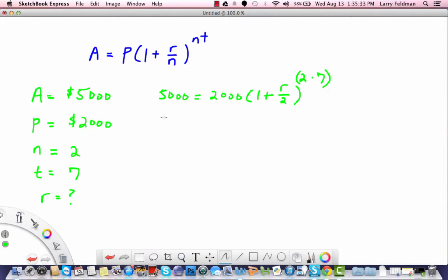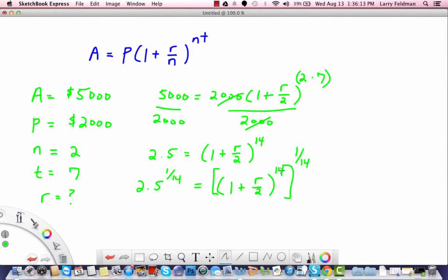Let's simplify. We can divide both sides by 2,000. That cancels. 5,000 divided by 2,000 is 2 and a half. This becomes 1 plus R over 2 to the 14th. And now what we need to do is raise both sides to the 1 over 14th power, and the reason why is because when you raise a power to a power, you multiply the exponents so 14 times 1 over 14 is 1.